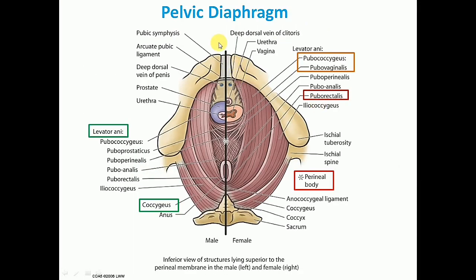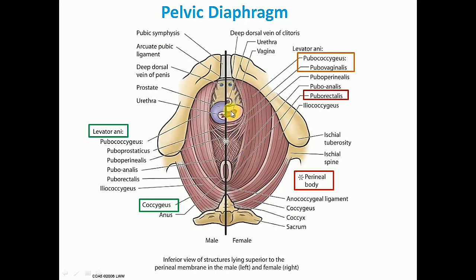The first chief support is the pelvic diaphragm or the pelvic floor, which consists of two muscles: levator anae and the coccygeous muscles. In the right half we can see the pelvic diaphragm of the female. The muscles of levator anae and coccygeous arise from the side of the pelvic wall and these muscle fibers converge towards the median plane where the fibers are traversed by the urethra, vagina and the anal canal.